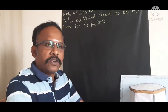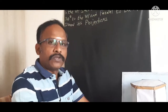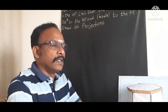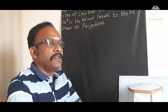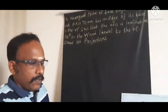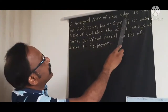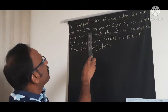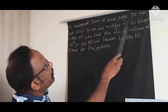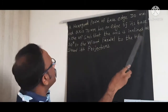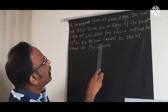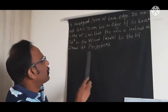Welcome to the course Engineering Drawing. Today we are going to solve a type 2 problem — that means projection of solids inclined to the VP. This is our problem: a hexagonal prism of base edge 30 mm and axis 70 mm has an edge of its base in the VP such that the axis is inclined at 30 degrees to the VP and parallel to the HP. Draw its projections.